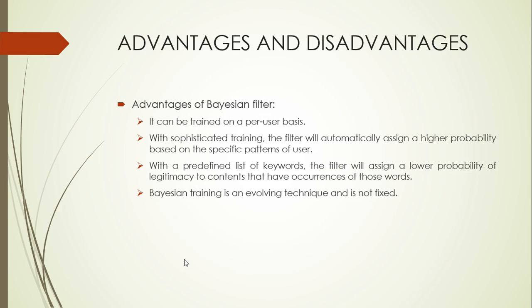Here I will discuss the advantages and disadvantages of the Bayesian technique. First, the advantages: it can be trained on a per-user basis, which means it is dynamic. With sophisticated training the filter will automatically assign a higher probability based on the specific patterns of the user. Also, with a predefined list of keywords the filter will assign a lower probability of legitimacy to contents containing those spam keyword words. Bayesian training is an evolving technique and it is not fixed.